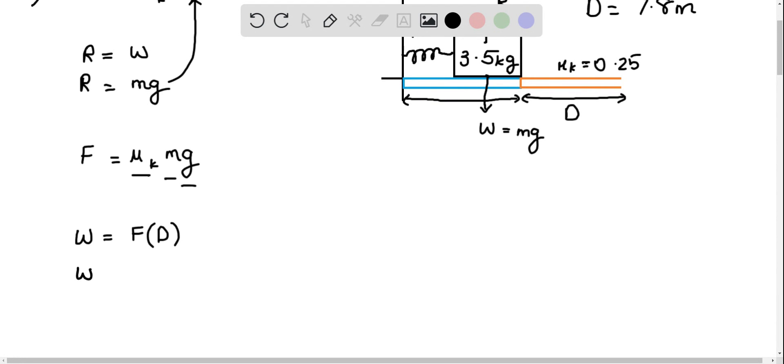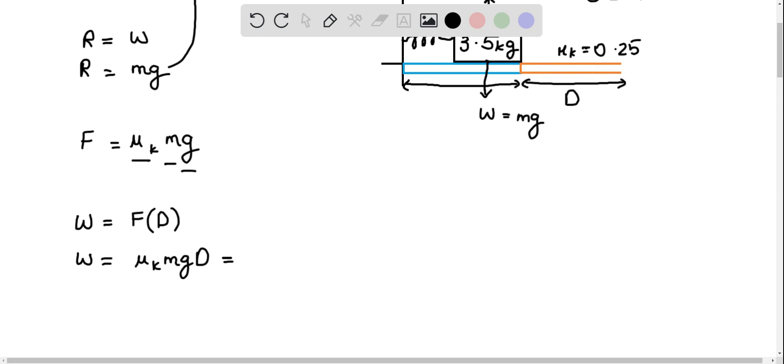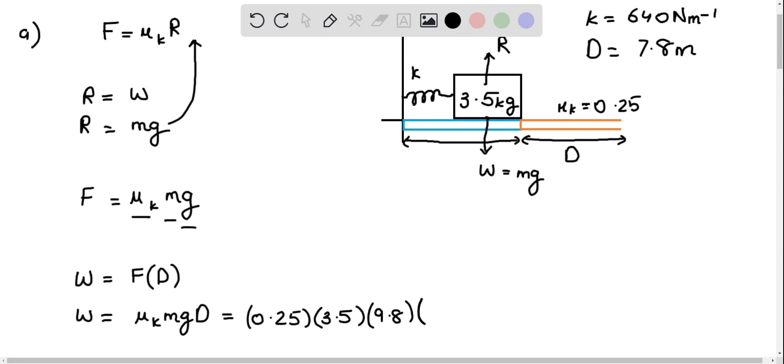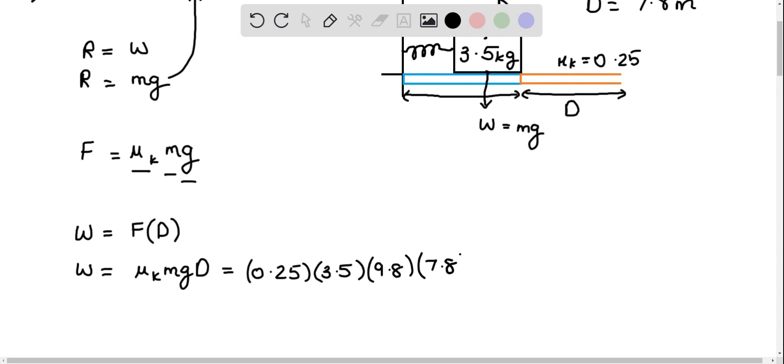So the work done is actually equal to mu sub k times m times g times d, and we have all of these values. So mu equals 0.25, the mass of the block is 3.5 kilograms, gravitational acceleration is 9.8 meters per second squared, and d is 7.8 meters. It's a simple matter of performing the multiplication, which we can do using a calculator. And this just turns out to be 67 joules to two significant figures, and that is our answer to part one.